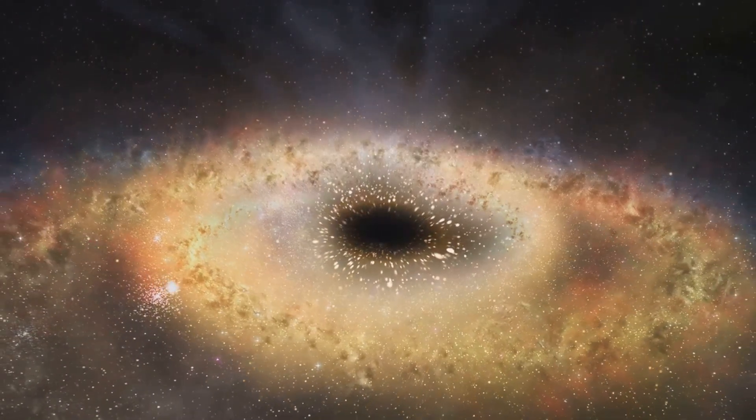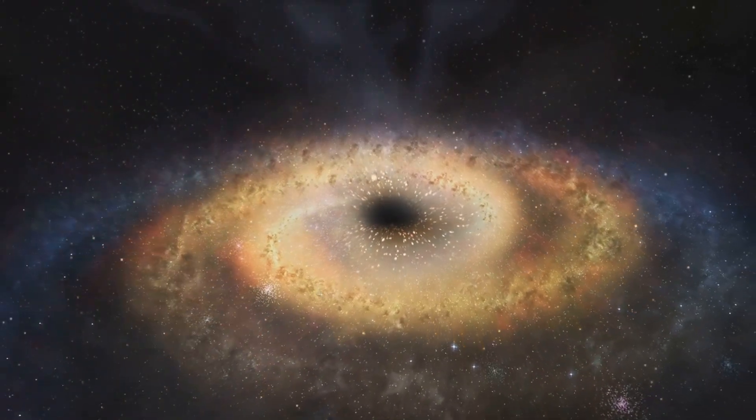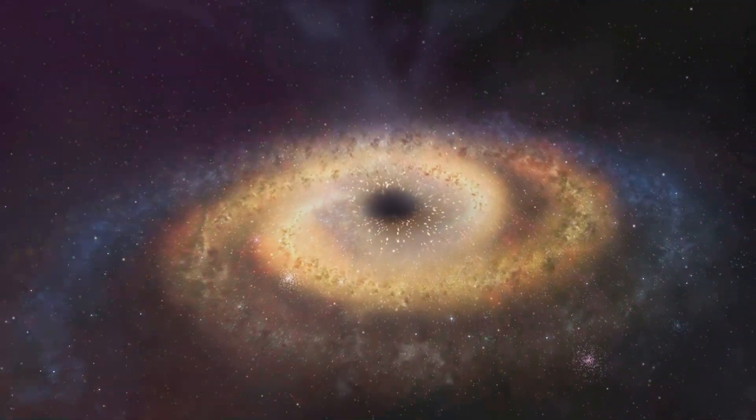But it's not just the S-stars that would feel the effects. The absence of Sagittarius A could alter the conditions in the galactic core, potentially impacting star formation processes. The effects of Sagittarius A's disappearance would create a ripple effect throughout the galaxy. Stars in the inner region would drift away from their previous paths, leading to new interactions and collisions.